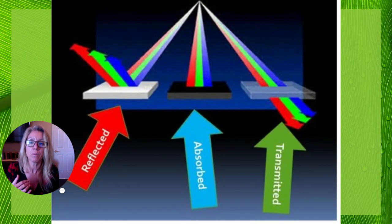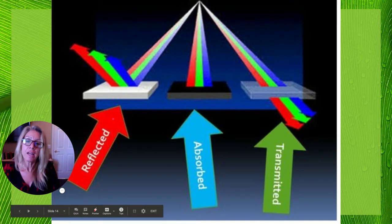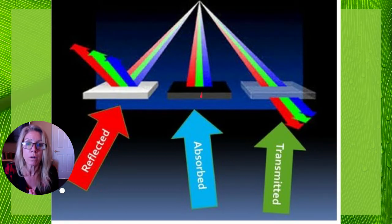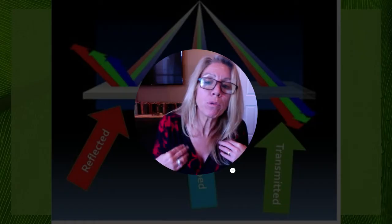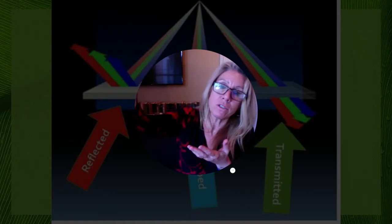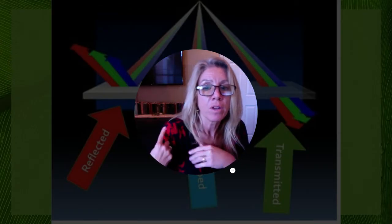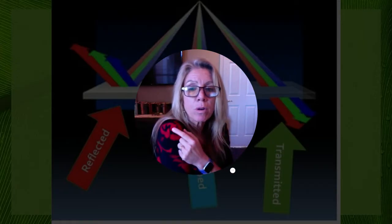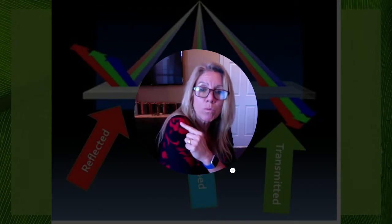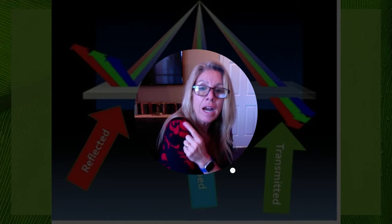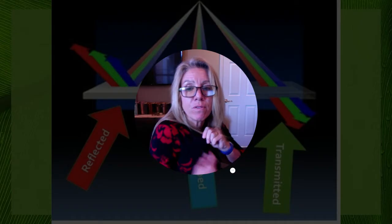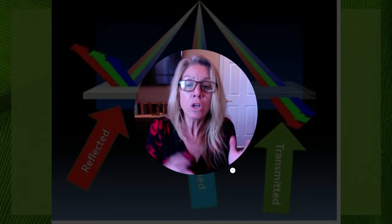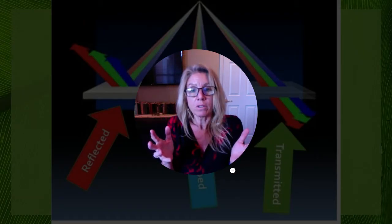What happens when light hits something? One thing that can happen is the light bounces off and gets reflected. Another is that it gets absorbed, and a third option is transmitted. For example, I'm wearing a dress that is red and black. The black portion is absorbing every bit of visible light. The red part is absorbing everything but red — red is getting reflected to you, and that's why you can see it. Transmitted would be if light could pass through to the other side.